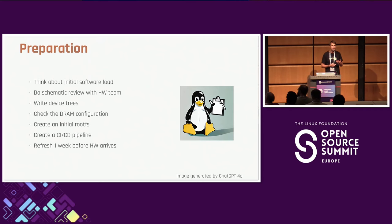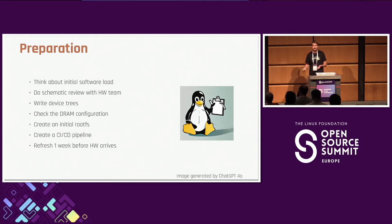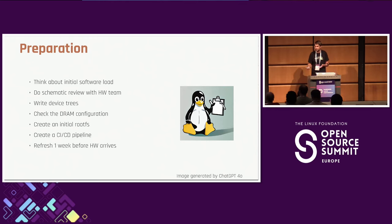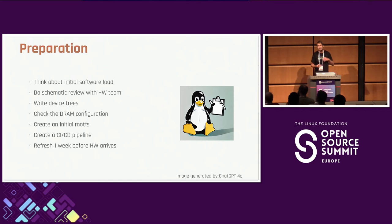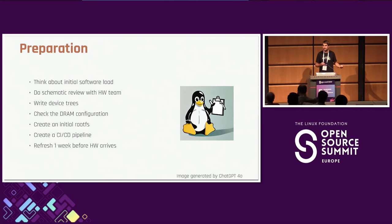After that, do a schematic review together with the hardware team. Focus on key components like PHYs or sensors which need Linux driver support — check if a driver exists for that component. If not, you already know there may be a problem. If another device can be substituted, the hardware team can still switch it. After that, write the device tree as early as possible; you may still catch hardware issues and tell the team to make corrections.